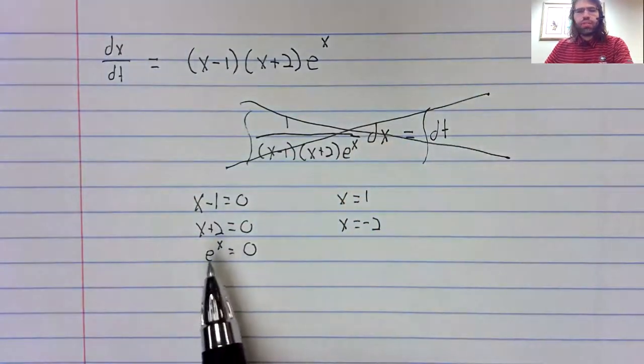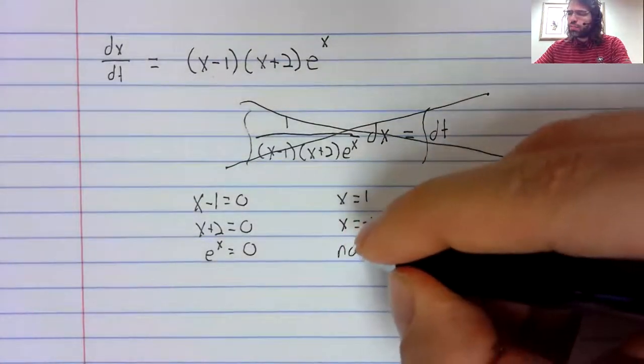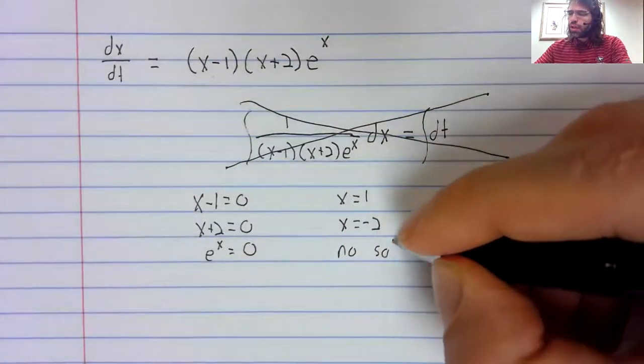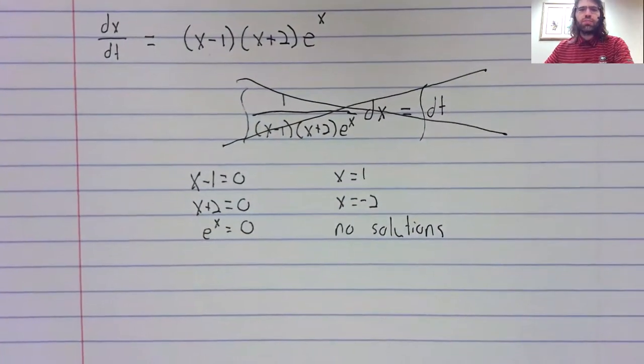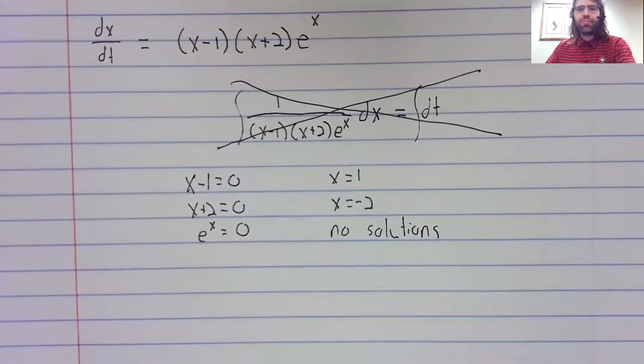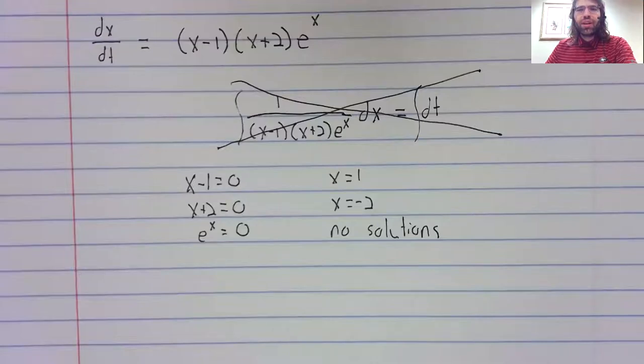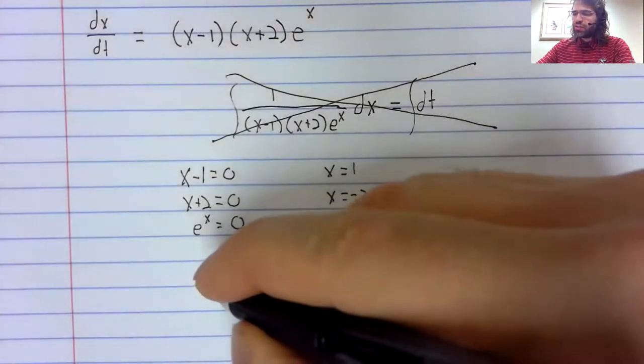However, e to the x equals zero has no solutions, so we don't get any fixed points from that. And what we're going to do now may seem very familiar. You'll have seen stuff like this in calculus one, when you learned the first derivative test.